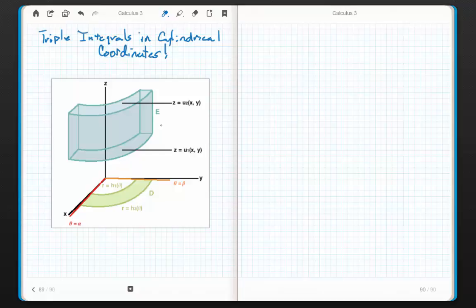Cylindrical coordinates are just an extension of polar coordinates. And we've already played with double integrals and polar coordinates. We know how polar coordinates work. Let's make sure we remember.